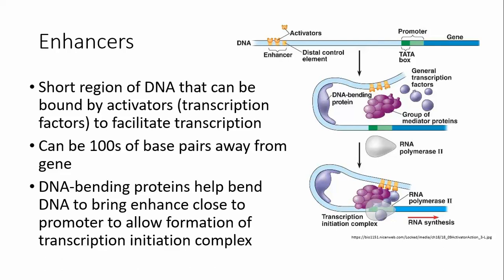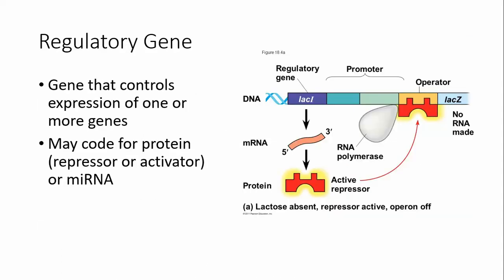Enhancers are regions of DNA that are not usually close to the gene — they can be very far away — and they allow activators to bind to help get the transcription initiation complex formed. Regulatory genes are genes that produce either repressors or activators, and they can be close to the gene or, in eukaryotes, very far from the gene, because you do have regulatory genes in eukaryotic genomes as well.